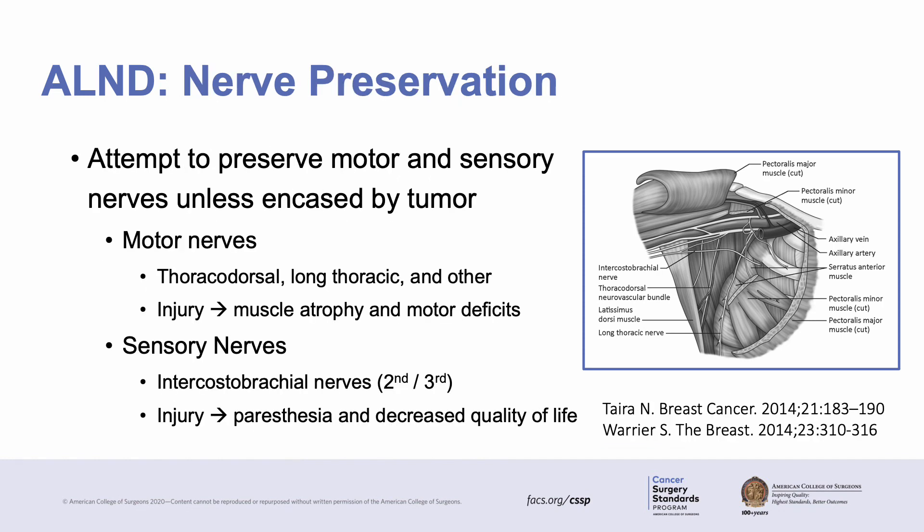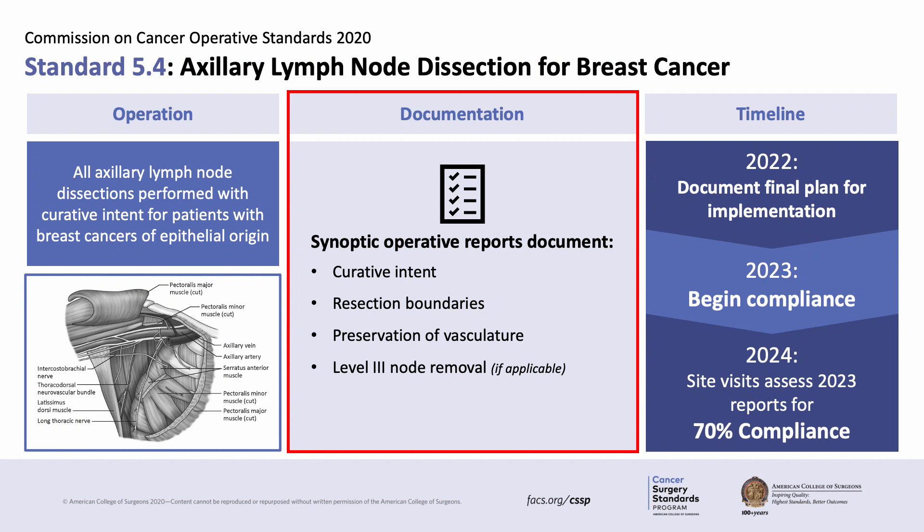This standard also addresses nerve preservation during axillary dissection. Motor and sensory nerves should be clearly identified and preserved unless this would compromise oncologic outcomes, as would be the case if the tumor was encasing the nerves. Motor nerves include the thoracodorsal and the long thoracic nerves. Injury to the motor nerves can cause paresthesia and decreased quality of life. Once this has been done in the operating room, we can turn our attention to appropriate documentation, which is the second part of the standard.